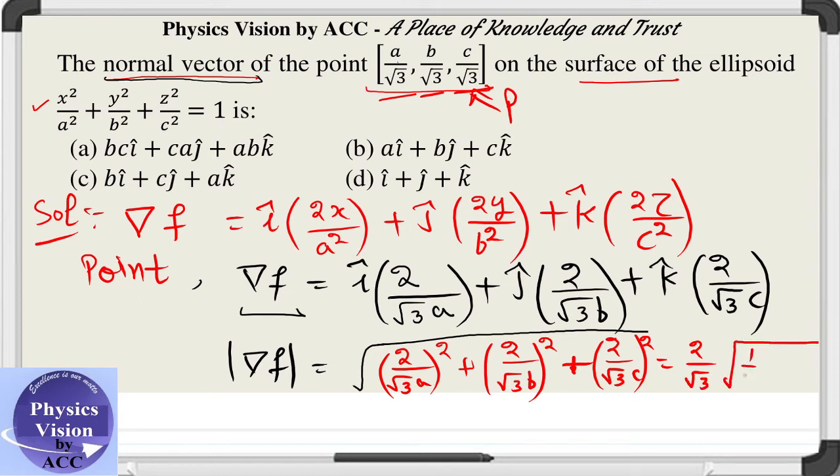Now you can see that 2 by root 3 is common in all. The rest of the terms is 1 by a squared plus 1 by b squared plus 1 by c squared. Now let us divide the given vector or the derived vector with its magnitude.